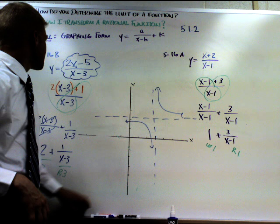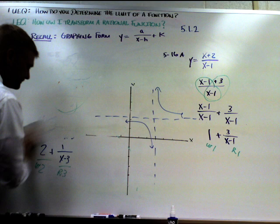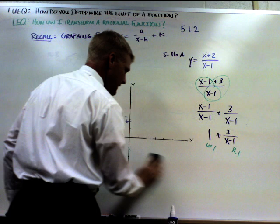Next problem, five dash seventeen: find a possible function for the graph shown. All right, I'm going to get rid of all this, so if you need it you're going to have to push pause and rewind. Now I'm not going to erase the graph because I want to sketch the one they gave you in the book.